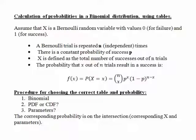Let's recall what we mean by a binomial distribution. Assume X is a Bernoulli random variable which takes values 0 for failure and 1 for success. When looking at a binomial distribution, a Bernoulli trial is repeated n independent times, there is a constant probability of success p, and the random variable X is defined as the total number of successes out of n trials.